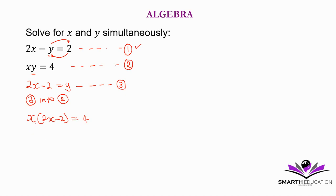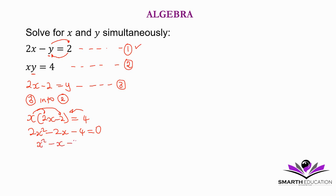Then we distribute the x. It becomes 2x squared minus 2x minus 4, and after transposing positive 4 to the left hand side it equals 0, so that our equation is in standard form. Now we can divide everything by the highest common factor, which is 2 — divide everything including the 0 — so we get x squared minus x minus 2 is equal to 0.